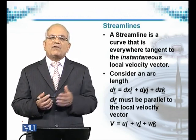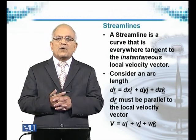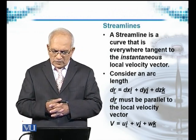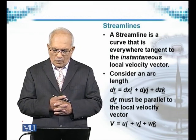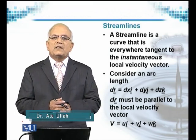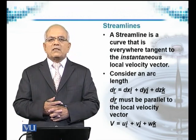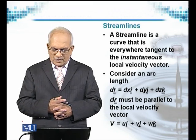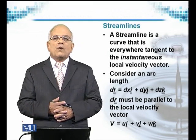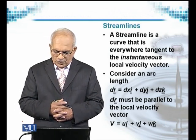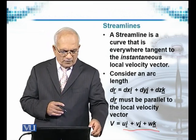If we try to plot a velocity vector, the streamline will be described as a line that is tangent everywhere to the local velocity vector. We consider an arc represented by dr, and in its component form it will be dx·i, where i is the unit vector in the x direction, plus dy·j, where j is the unit vector in the y direction, plus dz·k, where k is the unit vector in the z direction. Therefore dr must be parallel to the local velocity vector v, which is given by u·i plus v·j plus w·k.